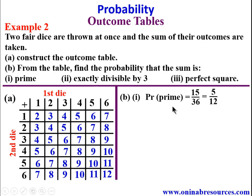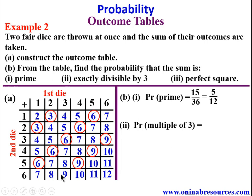For B2, exactly divisible by 3: we go to the table and look for all numbers divisible by 3. We find 3, 6, 9, 12 — and there are 2 such numbers from each row, giving a total of 12 numbers divisible by 3. The probability of obtaining a sum exactly divisible by 3 is 12/36 = 1/3 in simplest form.